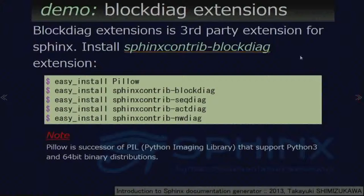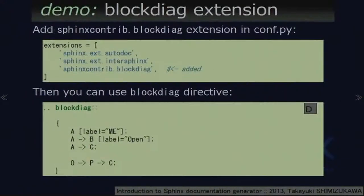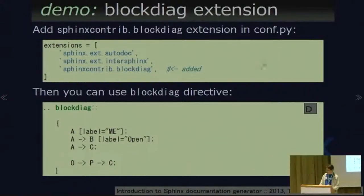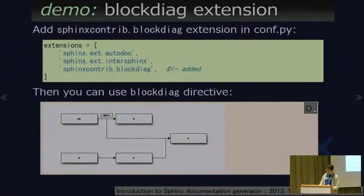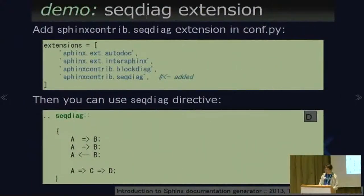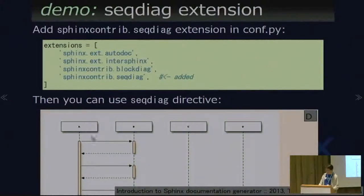And the BlockDiag extension — BlockDiag is a third-party extension for Sphinx. You install it via a command and add sentences to conf.py. You can then use the block_diagram directive, which uses a GraphViz-like syntax, but BlockDiag rendering produces very clean square diagrams. The BlockDiag series also provides the sequence diagram extension, which renders from code to a sequence diagram.